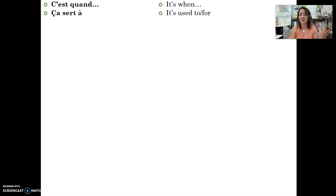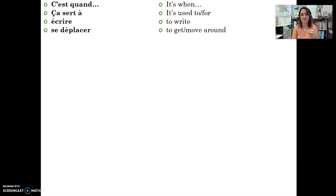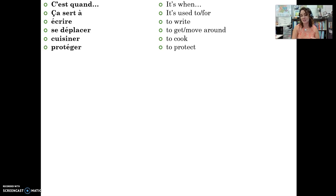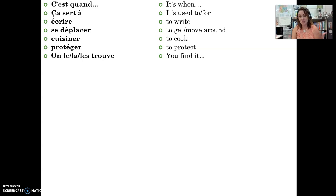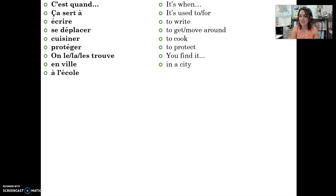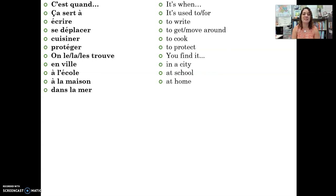On le trouve — you find it. Use le if it's masculine, la if it's feminine, and if you don't know, just use le. On le trouve dans une boîte, on le trouve en ville (you'll find it in a city), on le trouve à l'école (you'll find it in a school), à la maison (it's in your house), dans la mer (it's in the ocean). C'est fait — it's made of: c'est fait en papier (it's made out of paper), so you can describe the material.